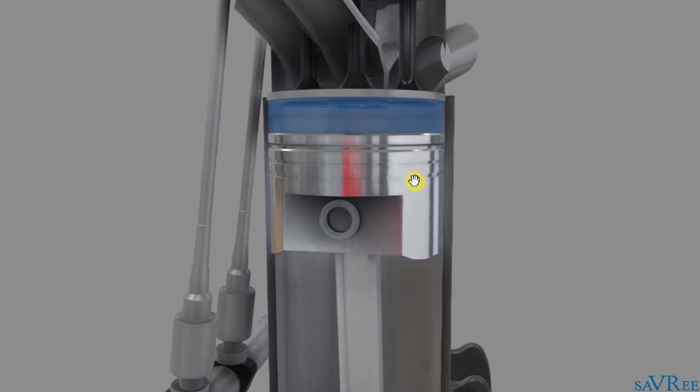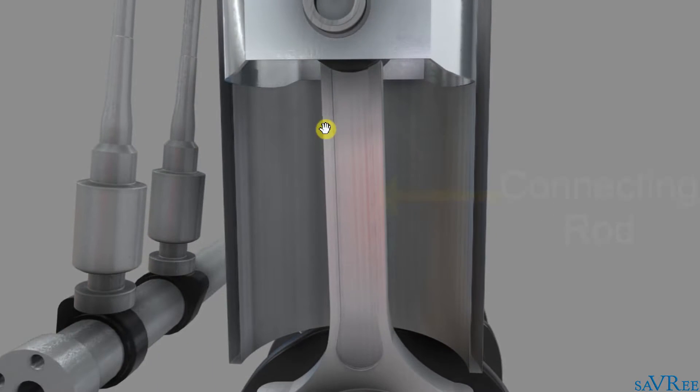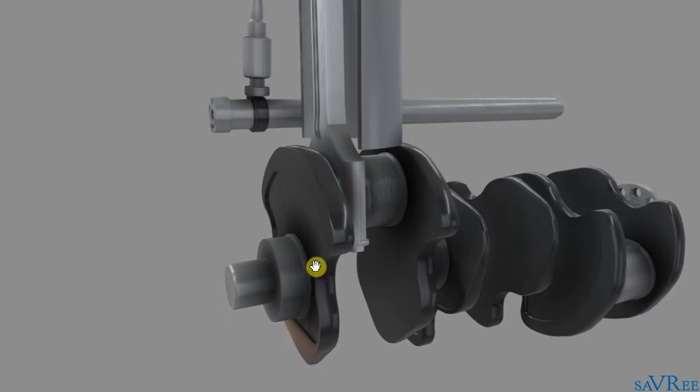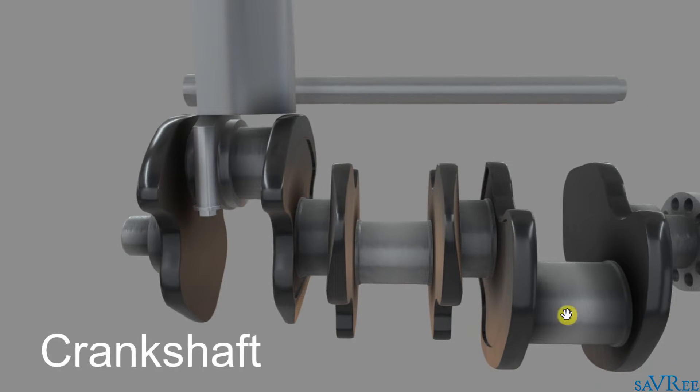As you can see, we have a piston. That is this section here. The piston connects to a connecting rod, and the connecting rod connects to a crankshaft. That is this weird up and down shaped item here that stretches from the right side all the way along to the left side.